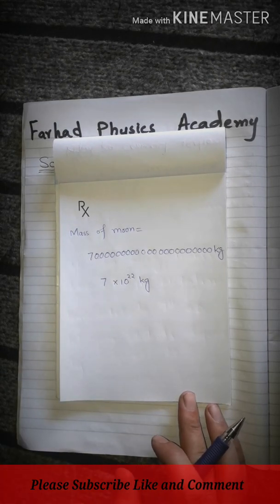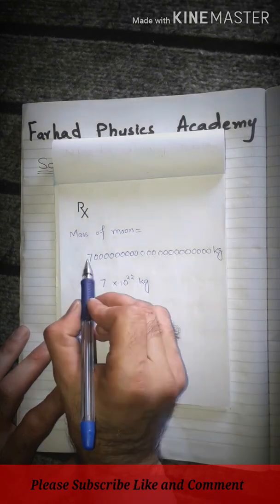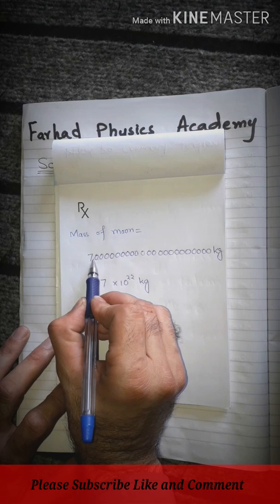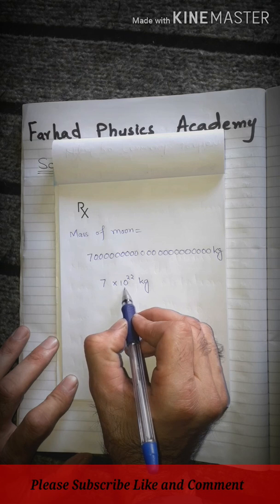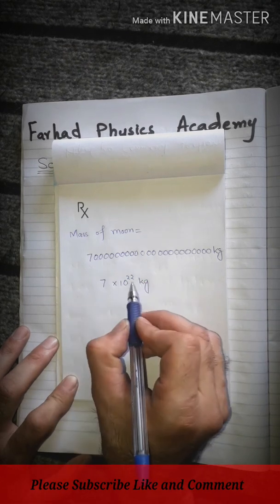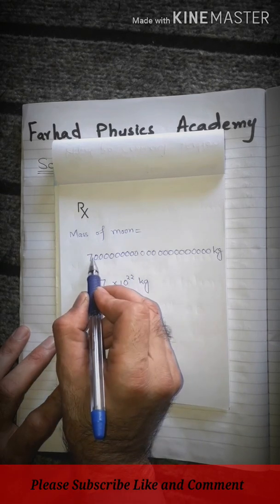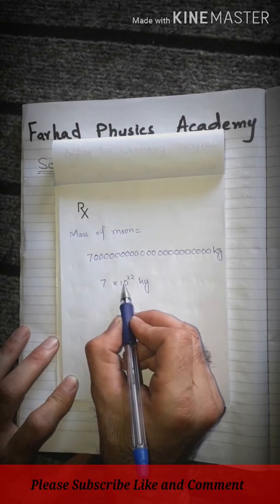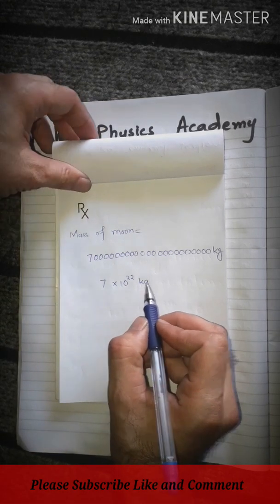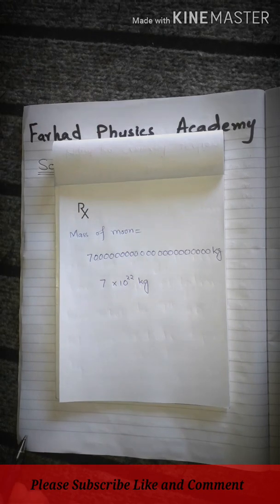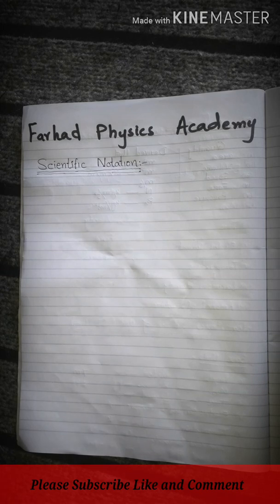Every number has a decimal at the end. We will move that decimal to after the first non-zero digit. And the remaining numbers will be counted, and we will write the power of 10. However many digits we count, that will become the power. For example, here there are 22 zeros. We will remove them and put the decimal in its place. Then we will write power of 10. 10 power 22 kg. This is how it's shortened. There are direct rules for this. We will follow these rules.